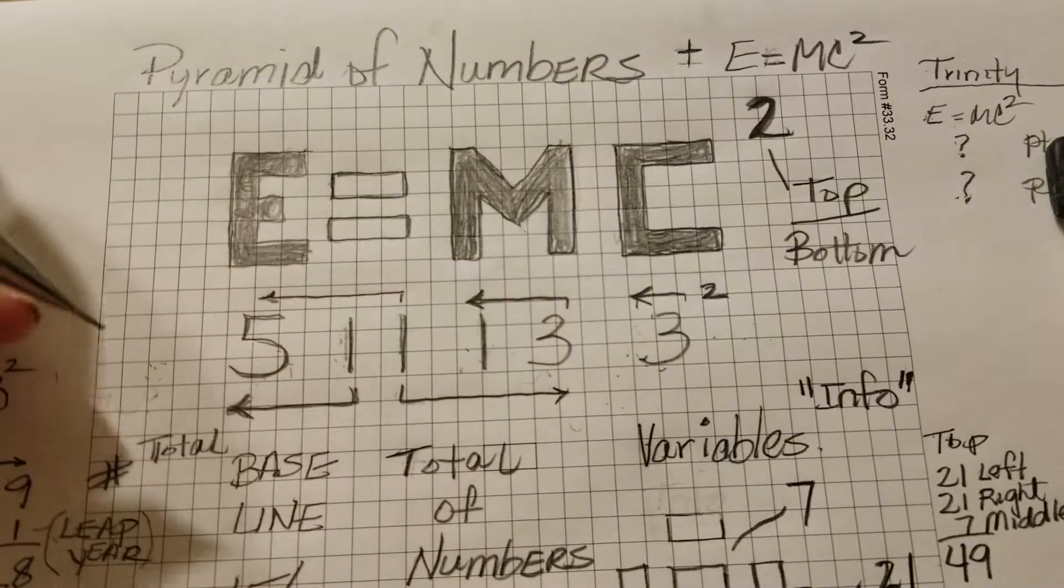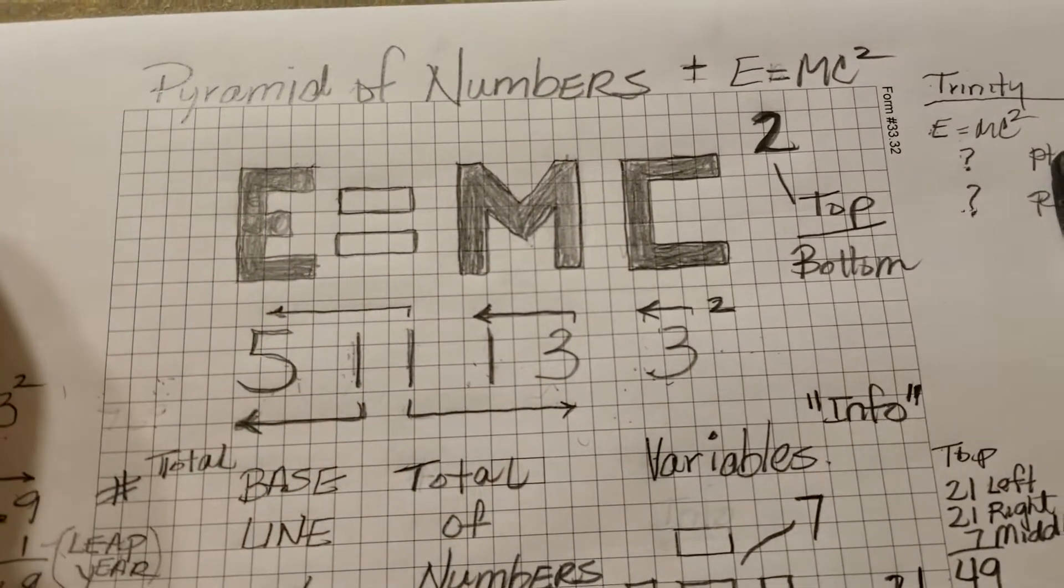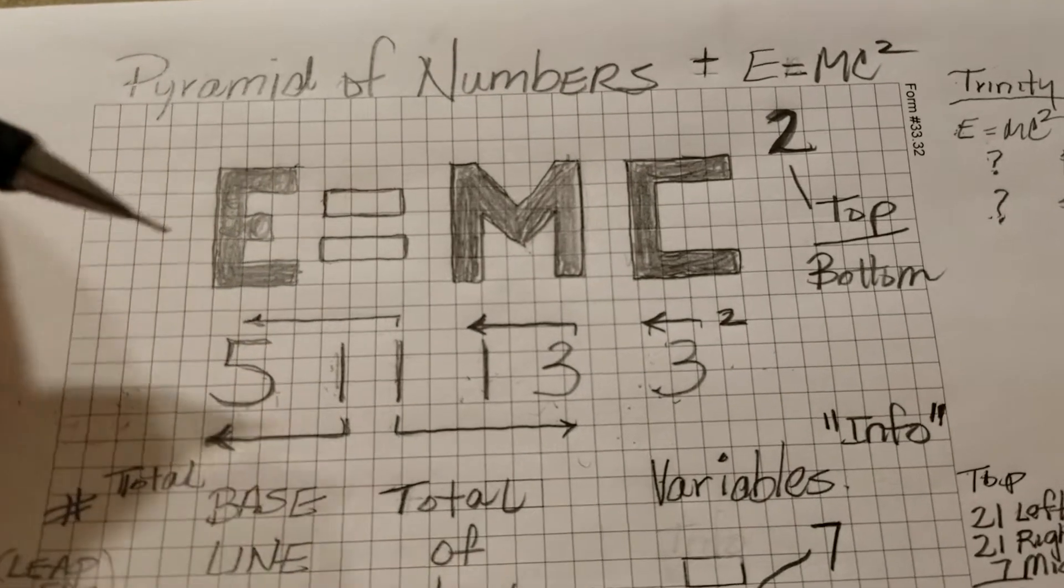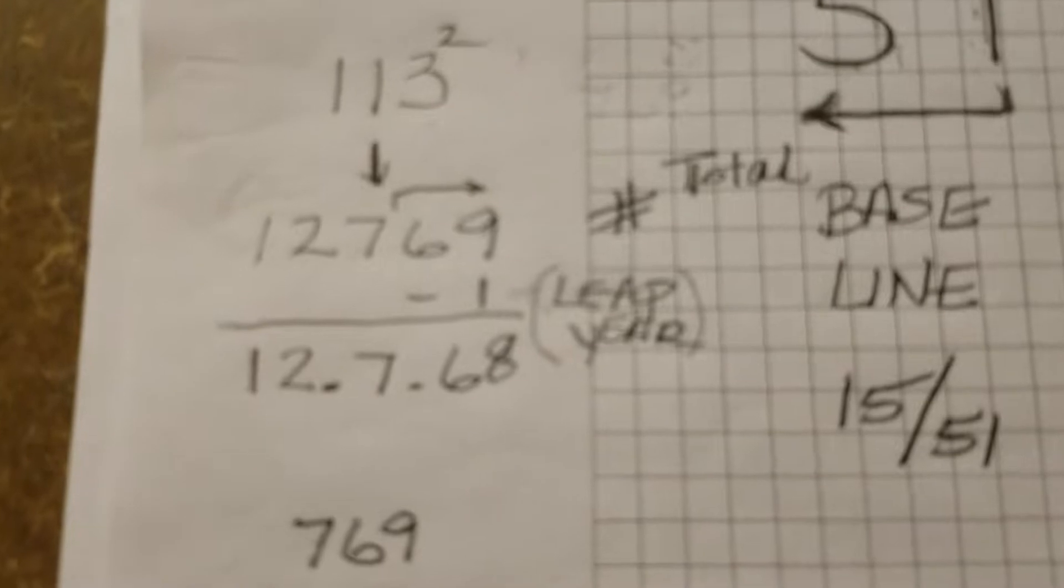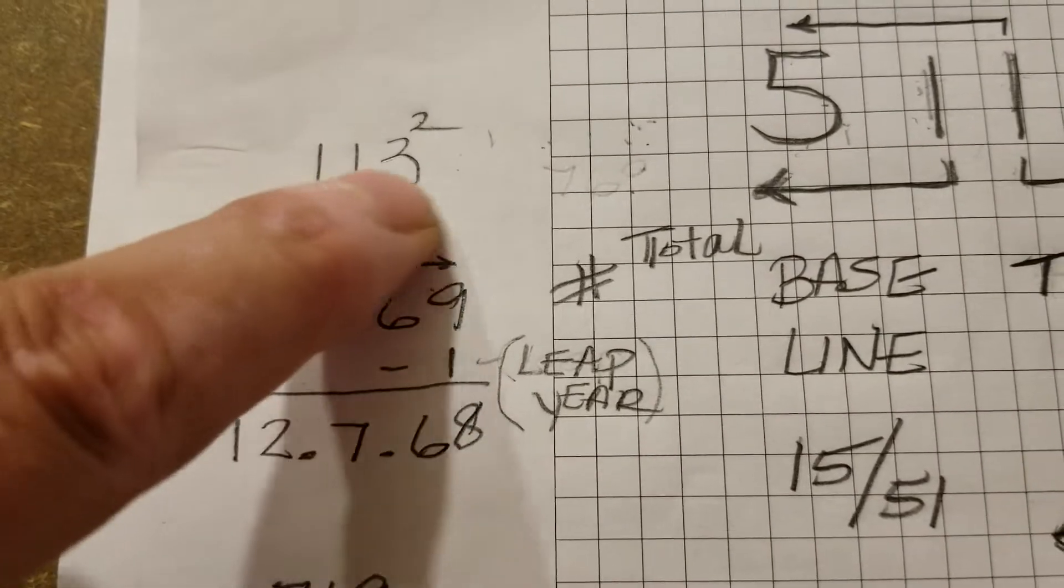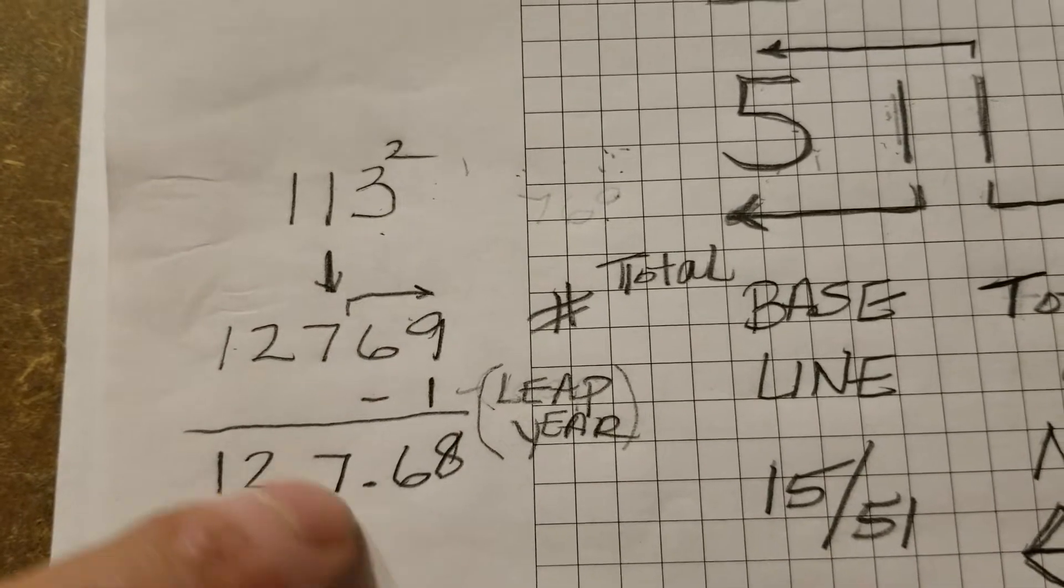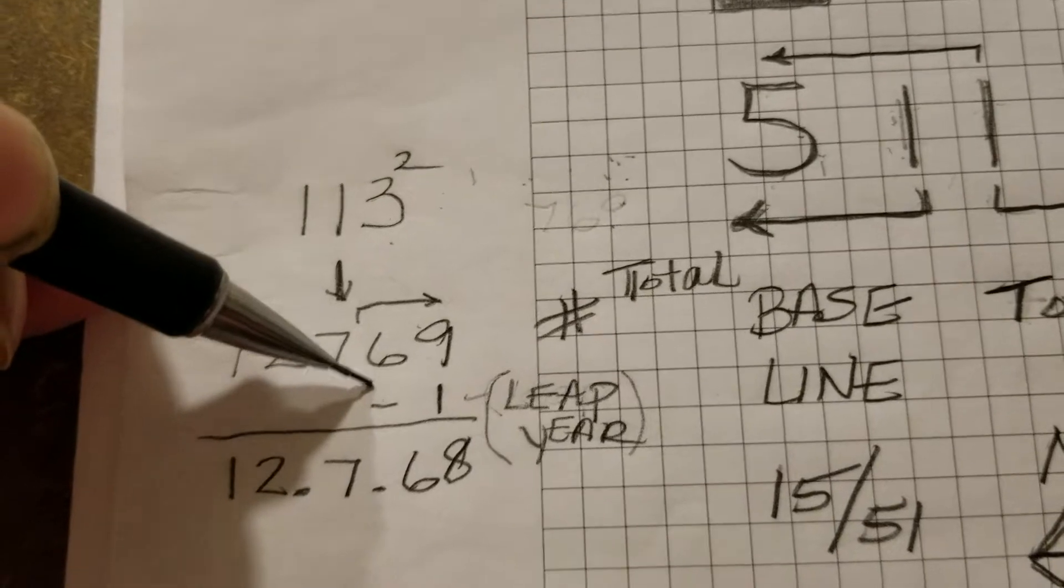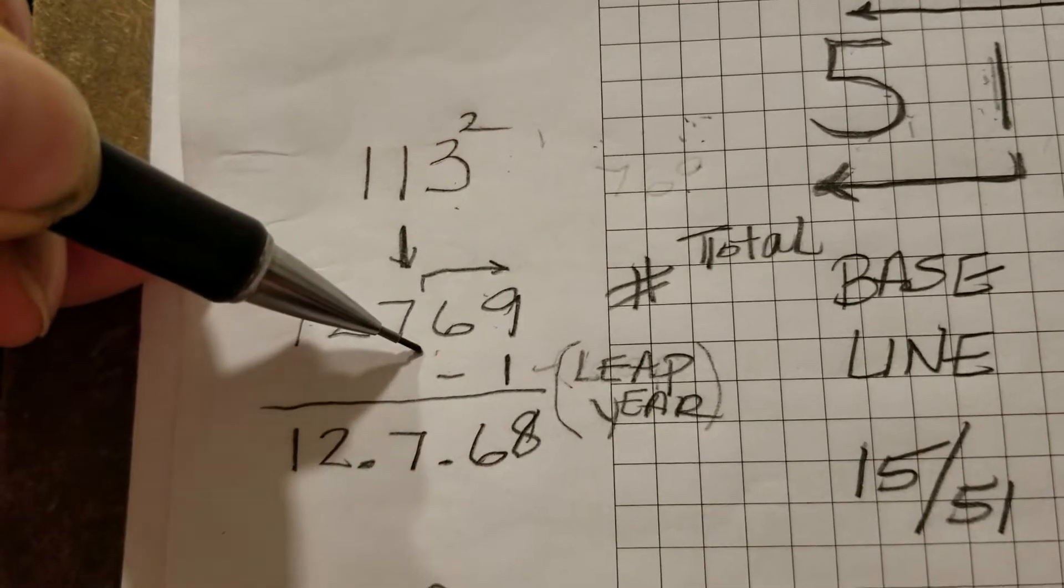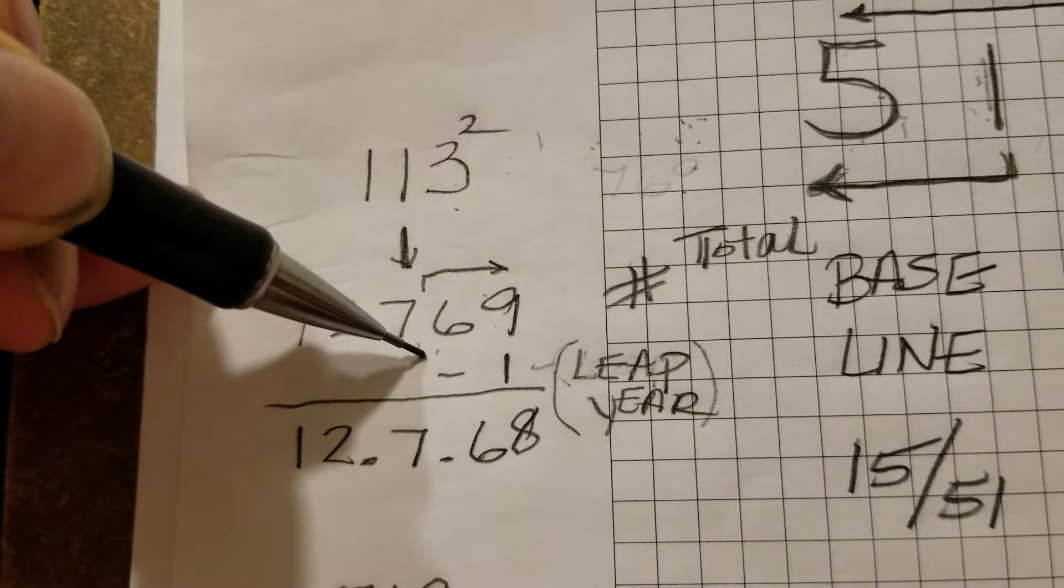Using my E equals MC squared, a little piece to the puzzle I left in my previous life, we use 113 squared, which is 12769. Why did we use the last three digits? Well, in a solar year count, you never go beyond three digits because our solar year is 365 days.